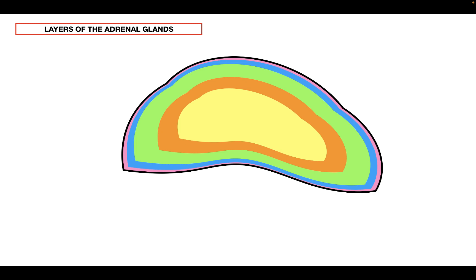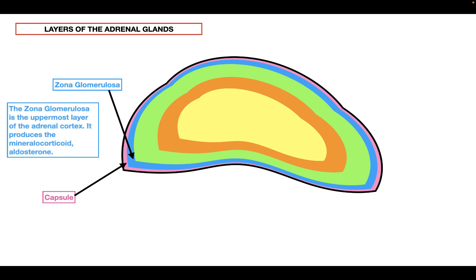Before we talk about the steps in the synthesis of aldosterone, I want to first remind you of the different layers of the adrenal glands. The adrenal glands have many different layers, and the first layer is called the capsule — connective tissue that encapsulates the entire adrenal gland. Below the capsule, we have the adrenal cortex, which is made up of three layers. The uppermost layer is called the zona glomerulosa, which produces the mineralocorticoid aldosterone.